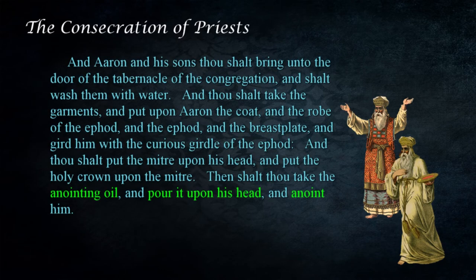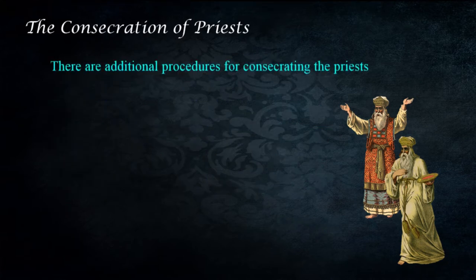The text details the procedures to be followed when consecrating Aaron and the priests: "Thou shalt bring unto the door of the tabernacle of the congregation and shalt wash them with water. And thou shalt take the garments, and put upon Aaron the coat and the robe of the ephod, and the ephod, and the breastplate, and gird him with the curious girdle of the ephod. And thou shalt put the mitre upon his head, and put the holy crown upon the mitre. Then shalt thou take the anointing oil and pour it upon his head, and anoint him." — Exodus 29:4–7.